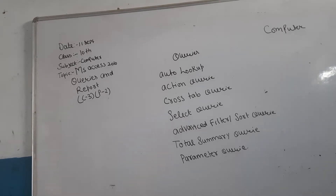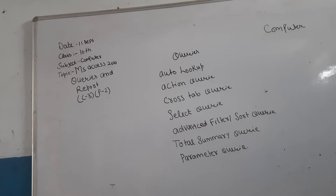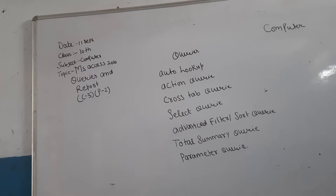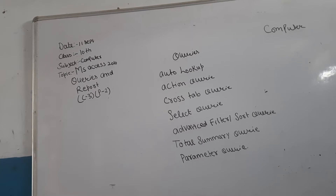Select query: you can select the data from one or more tables and display the data in the same order in which you choose to display it. Advanced filter: you can use the query to locate and sort information from a single table. Total summary query: you can use the query to calculate sum, average, and other aggregates for all your records, and it does not display any individual record but a summary of the table. Parameter query: this query will need some information from you before it can show the table datasheet.